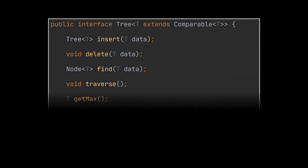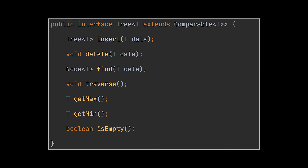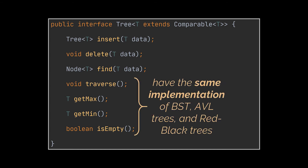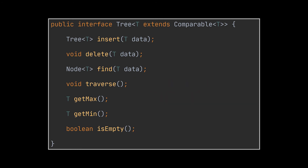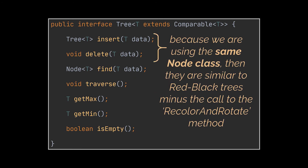Now let's look at the tree interface implemented by the splay tree class. This interface is very similar to the one we've been using in previous videos. Because splay trees are themselves binary search trees, checking whether the tree is empty, retrieving the maximum or minimum element, and traversing the tree all have similar implementations to what was previously covered for classic binary search trees.